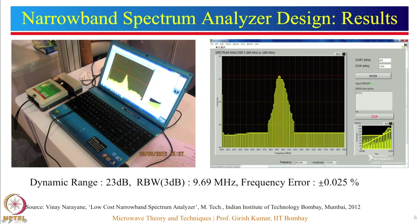The GUI has different options to enter the start and end frequency, an error console, a monitor, and a main graph with frequency on the x-axis and power level on the y-axis. There is also a marker functionality. As a result, the dynamic range of the system is around 23 dB. The resolution bandwidth is 9.69 megahertz, equal to the IF filter bandwidth, and the frequency error is quite low at plus or minus 0.025 percent.